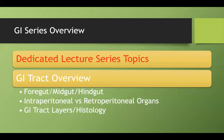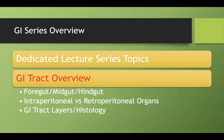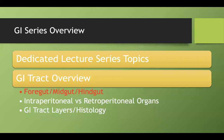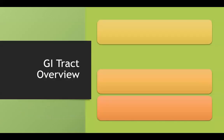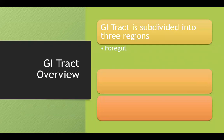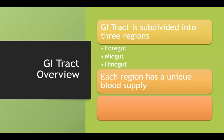Now that we've covered that, let's talk a little bit about the GI tract concepts, starting with the foregut, midgut, and hindgut. The GI tract is divided into these three regions: the foregut, midgut, and hindgut.